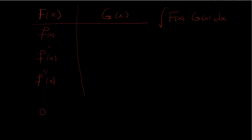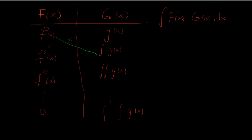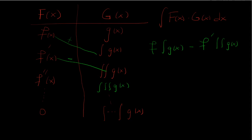You would take derivatives all the way down until f reaches zero. Then you select g(x) and take its integral each time. The next step is to multiply the diagonals — the first one has a positive sign. So it would be f times the integral of g(x). Then the next diagonal is minus, so it alternates signs. It would be minus f′ times the double integral of g(x). Then plus the second derivative of f times the triple integral of g(x), and so on.